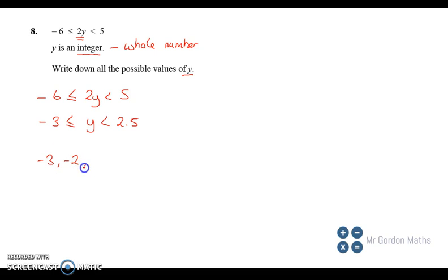Minus 2 could be included, minus 1 is still less than 2.5, then 0, 1, and 2. We can't go above 2, because the next one would be 3, which would be greater than 2.5, and we're not allowed to go above 2.5. So those are our values of y.